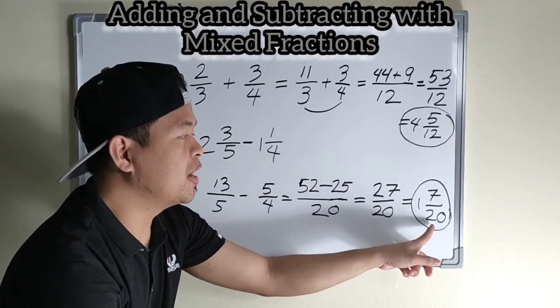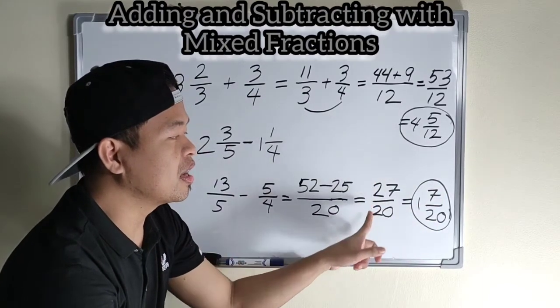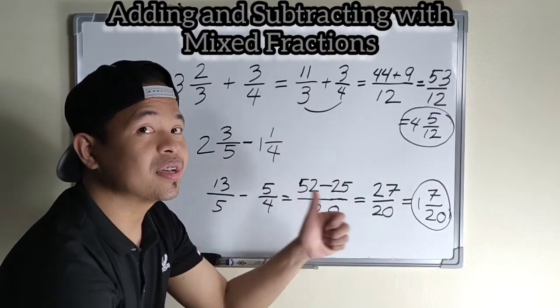Clockwise, simula sa baba. Twenty times one is twenty plus seven is twenty-seven. Then, copy the denominator. Pareha sya, no?